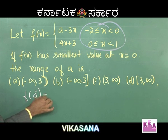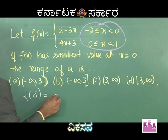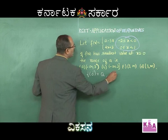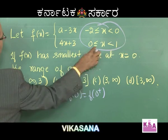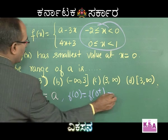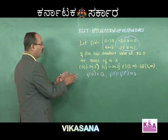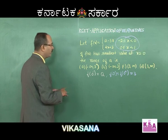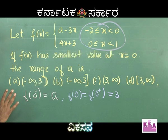f(0⁻) is clearly equal to a. f(0) = f(0⁺). Since we have greater than or equal to 0, f(0) or f(0⁺) = 4(0) + 3 = 3. So f(0⁺) = 3.